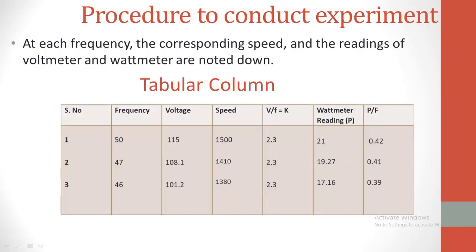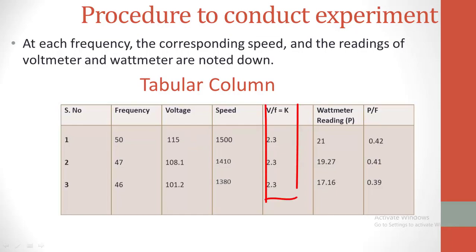This is the tabular column. Let me explain this with some numerical data. The alternator is rotated at rated speed. At rated speed, the frequency will be the rated frequency, that is 50 Hz. We adjust the field excitation of the generator until it generates the rated LV voltage, that is 115 V. The ratio of V/F, that is 115 divided by 50, is 2.3. This ratio of 2.3 is maintained constant throughout the experiment. At this speed, the wattmeter reads 21.